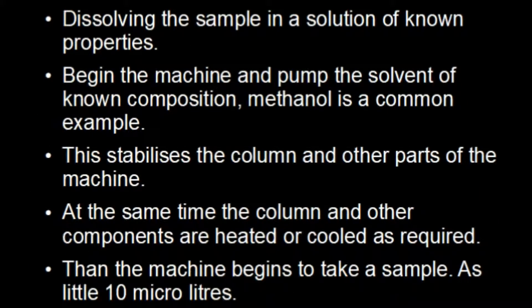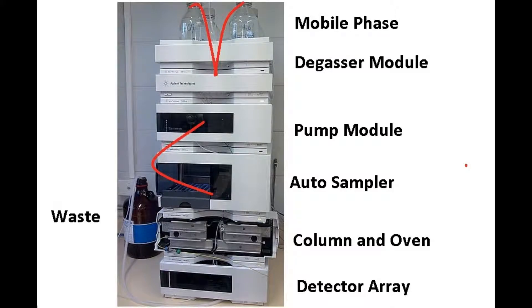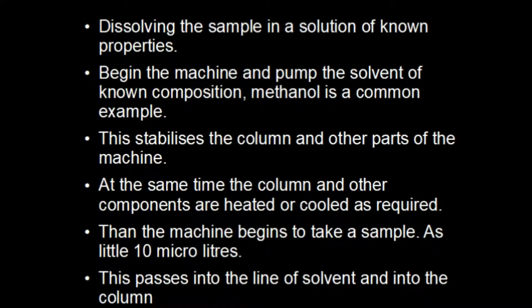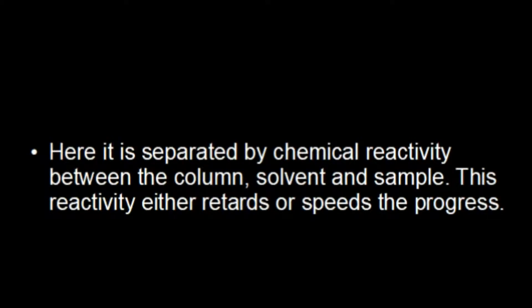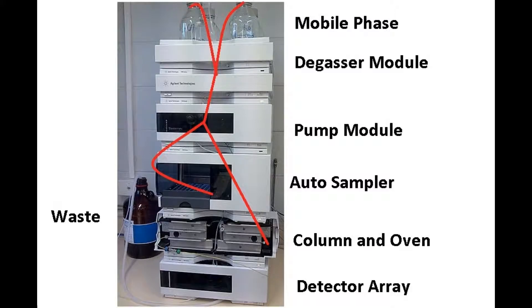Then the machine begins to take a sample. This can be as little as 10 microliters. This passes into the line of solvent and into the column. Here it is separated by chemical reactivity between the column, solvent, and sample.